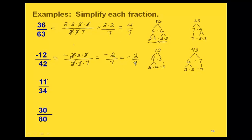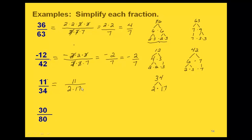Let's look at 11/34. 11 is prime, so we don't need to do anything to get its prime factorization. 34 is even because it ends in 4, so dividing by 2 gives us 2 times 17. Both 2 and 17 are prime, giving us the prime factorization 2 times 17. We have three prime numbers and no common factors between 11 and 34, which means the simplest form is the fraction we already had: 11/34.